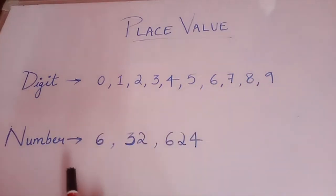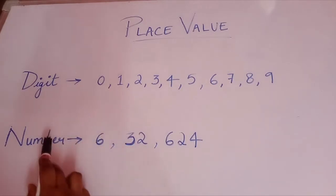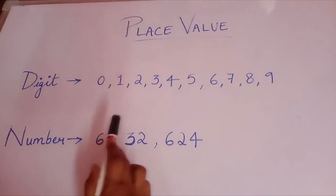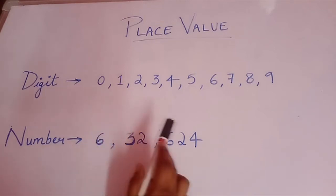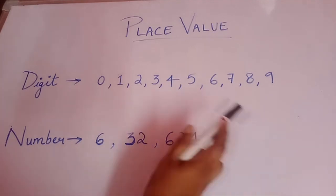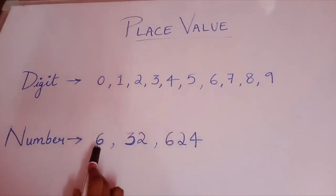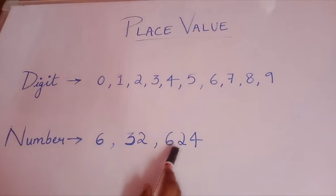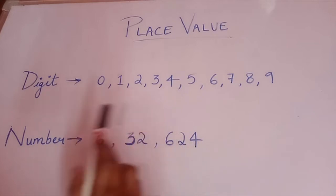Now what is a number? A number is formed by digits. It can be a single digit, it can be a 2-digit number, it can be a 3-digit number, and so on. So in this case, 6 is a single digit number, 32 is a 2-digit number, and 624 is a 3-digit number.